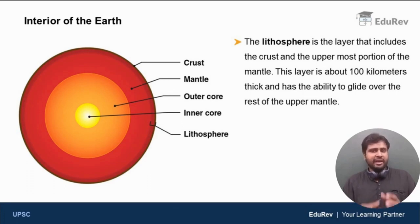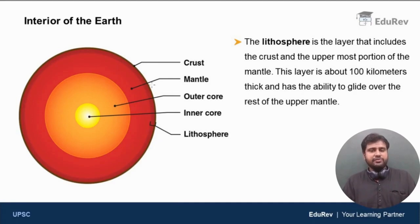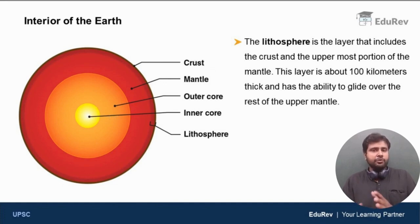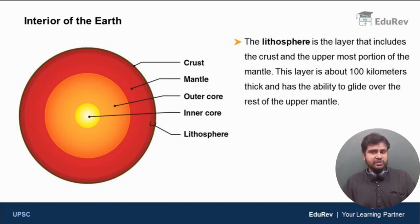We know that the interior of the earth is made up of three layers. First, we have the crust; second, mantle; and the last, core. Core can be divided into two parts: the outer core which is liquid and the inner core which is solid.